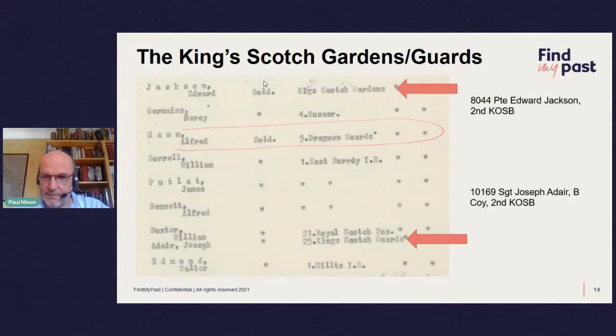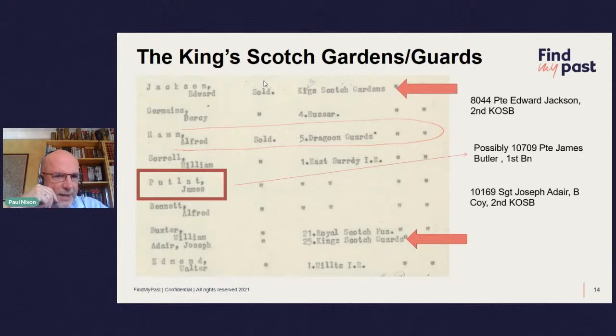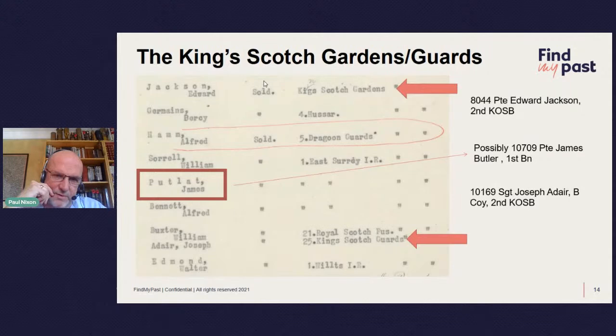There's another example: 'James Putlett' — not a name I've ever come across as a British surname. I think it's probably Butler. You can imagine the person standing at a table saying 'James Butler' and the clerk writing it down as 'Putlett.' That's at least how I think it was recorded.